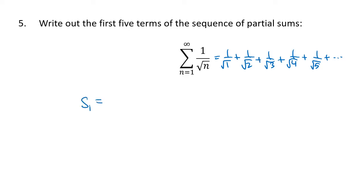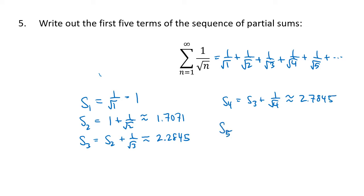So s₁ here is just going to be my first term, 1 divided by the square root of 1, but that's just 1. s₂ is going to be my previous sum, plus my next term, 1 plus 1 divided by the square root of 2, that's approximately 1.7071. s₃ will be my previous term, s₂, plus 1 divided by the square root of 3, that'll be approximately 2.2845. s₄ is s₃, plus my next term is 1 divided by the square root of 4, that's just 1/2, so that'll be 2.7845. And then finally, s₅ will be s₄, plus my next term, 1 over the square root of 5, which will be approximately 3.2317.